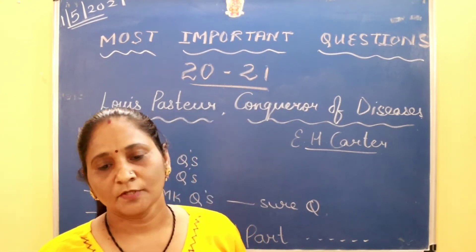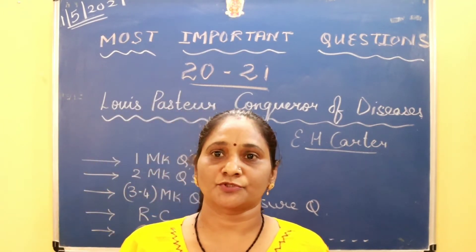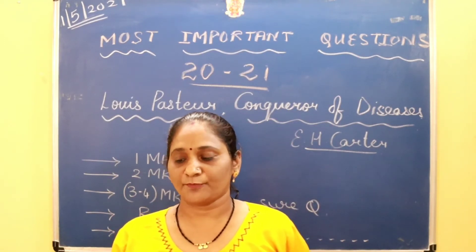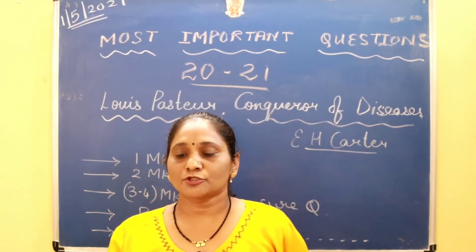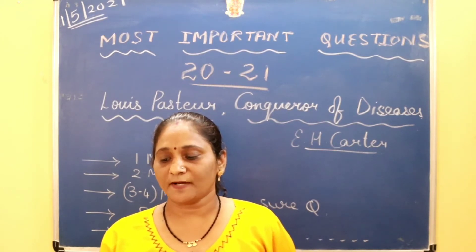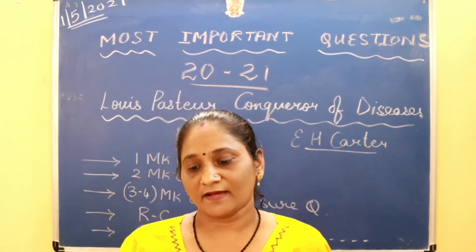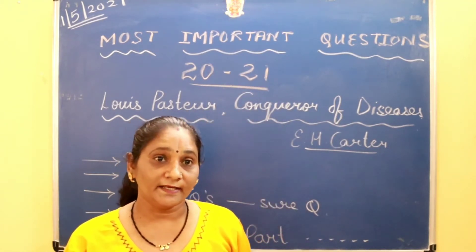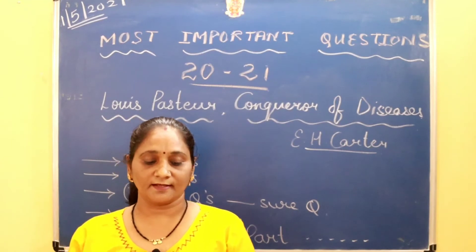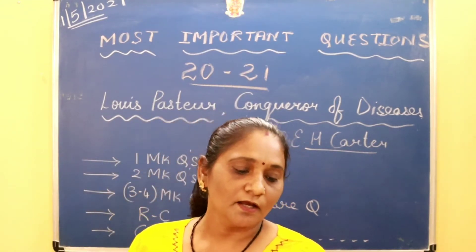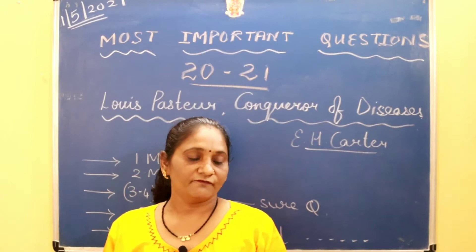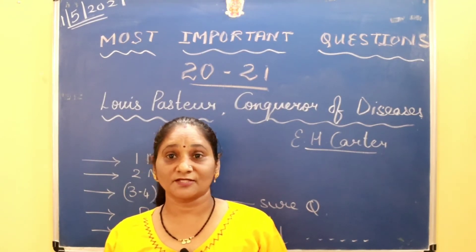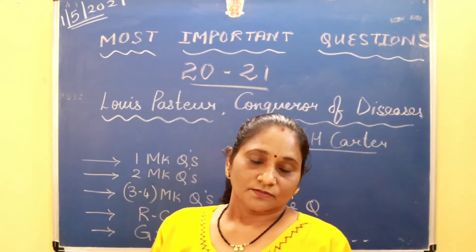Questions from this chapter may be one mark, two marks, three marks, and there is also a grammar part. Coming to the two-mark questions: how did Pasteur try to solve difficult problems? You will find the answer in point number five — he used to sit quietly and think. How did Pasteur react whenever he solved a problem? He ran to his wife and expressed his joy.